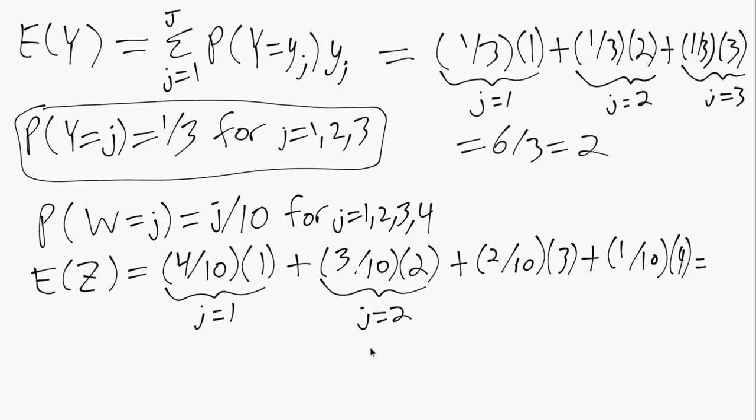Now we get 4/10 plus 6/10 plus another 6/10 plus another 4/10, which is 20/10 or 2. So we can see even though we have the same possible values as before, because we shifted to have more probability on the smaller values, the overall mean is lower than before.